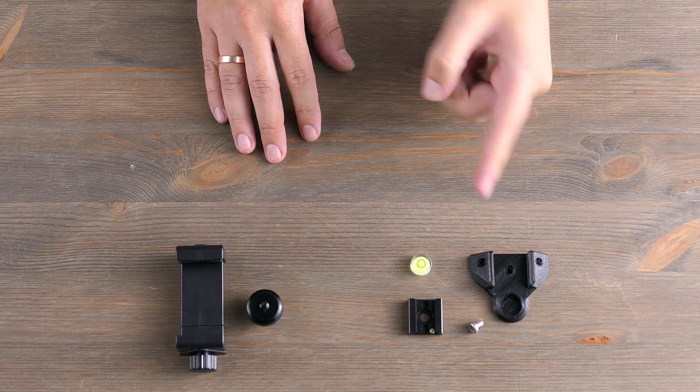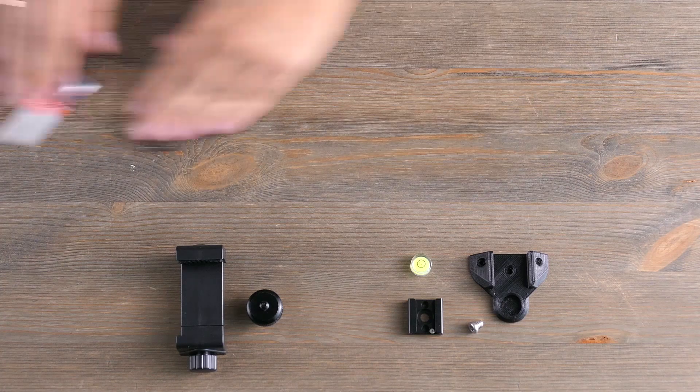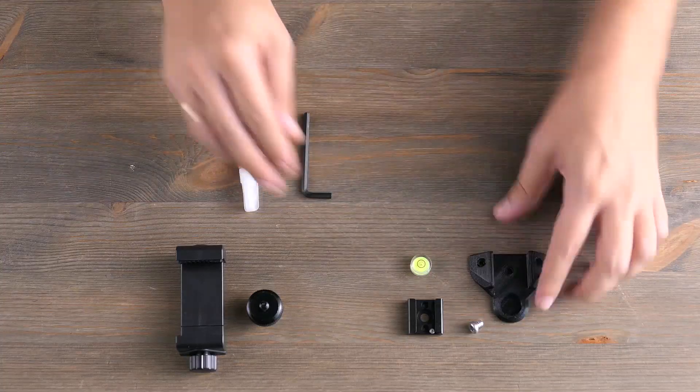These are the parts of the pro flash mount and you'll get these too if you order the smartphone holder. What you need on top of this is glue, a screwdriver or an allen wrench depending on the part.